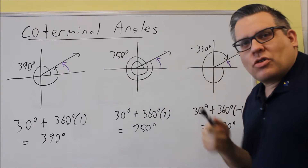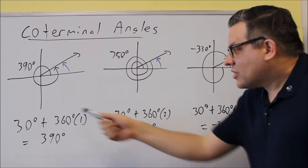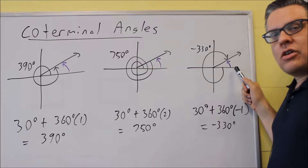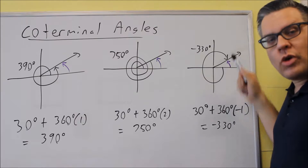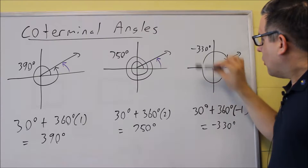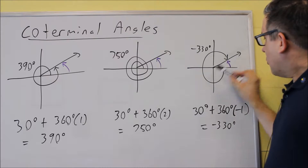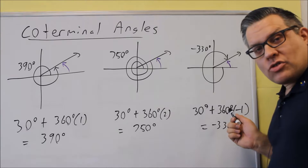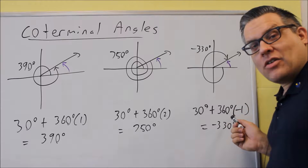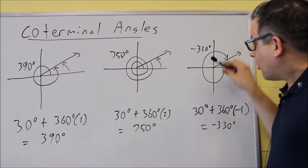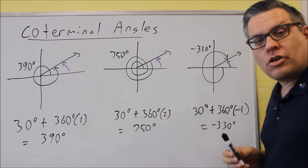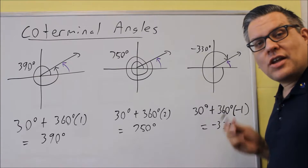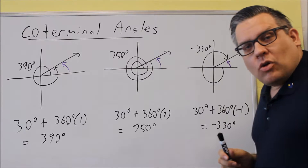Both of those first two examples used counterclockwise positive angles. You could also have a negative angle that is coterminal. Instead of going counterclockwise to 30 degrees, I can go clockwise to reach the same spot. Going clockwise one full revolution is negative because I'm going in the negative direction, which gives negative 330 degrees. So negative 330 is coterminal with 30 degrees.